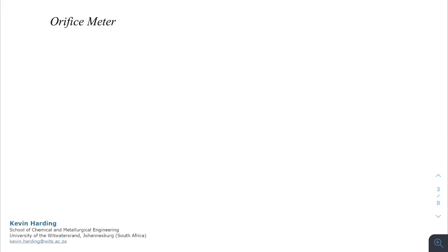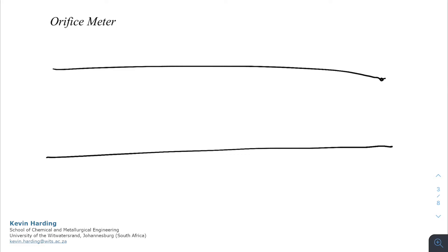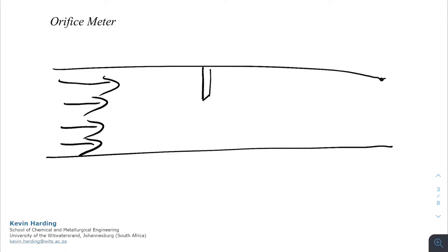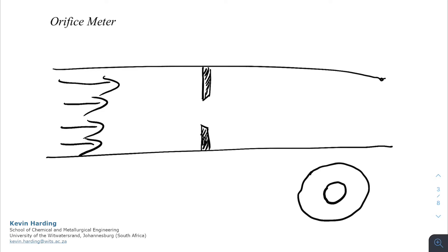We'll now look at an example using this: the orifice meter. An orifice meter is installed in a pipe at constant height where the fluid flows. The device causes the cross-sectional area to change — looking at it in cross-section it's a restriction to the flow. If you looked down the pipe you'd see a smaller hole in the middle, with the shaded section forming a donut shape that squeezes the flow to a smaller passage through the pipe.